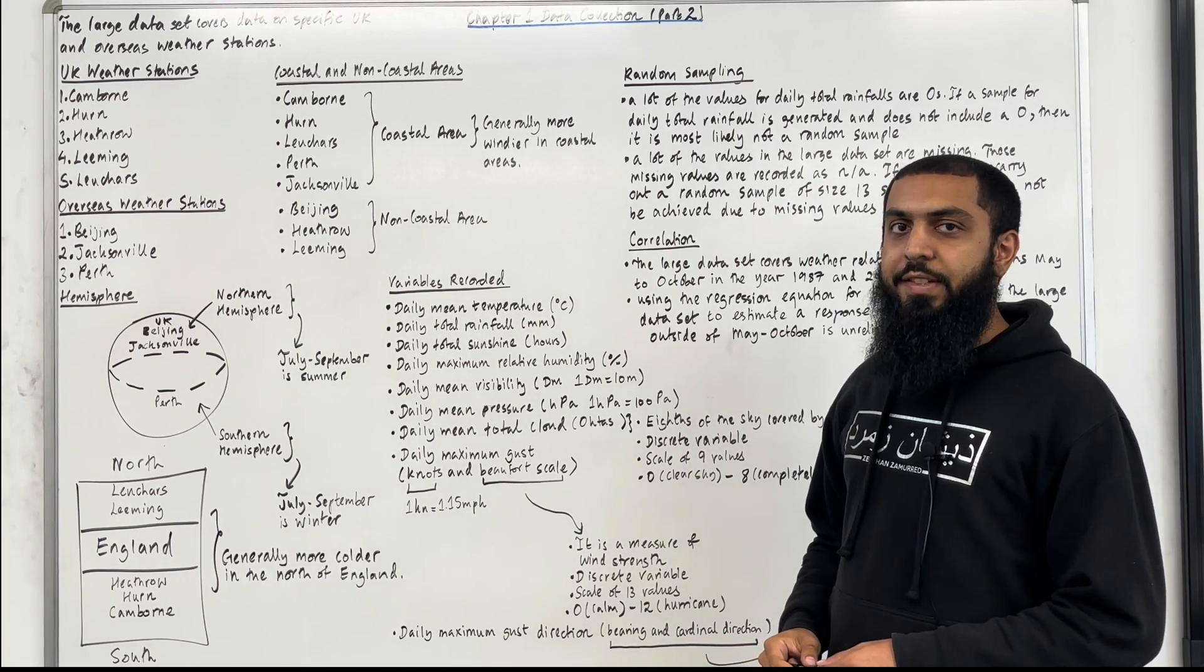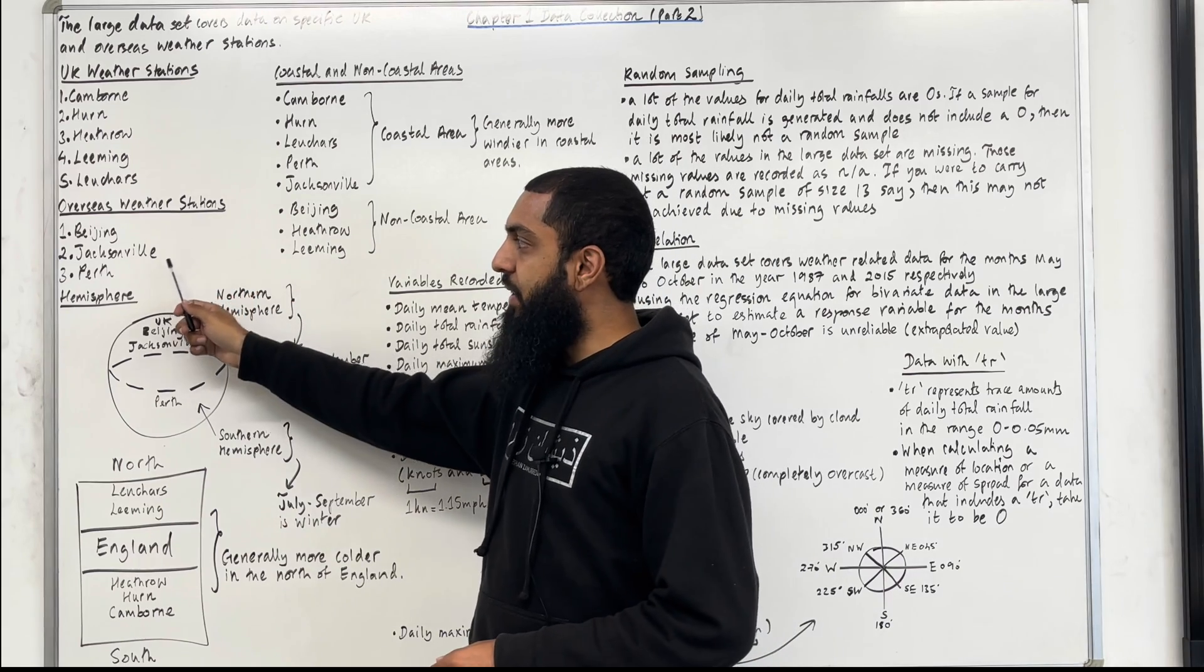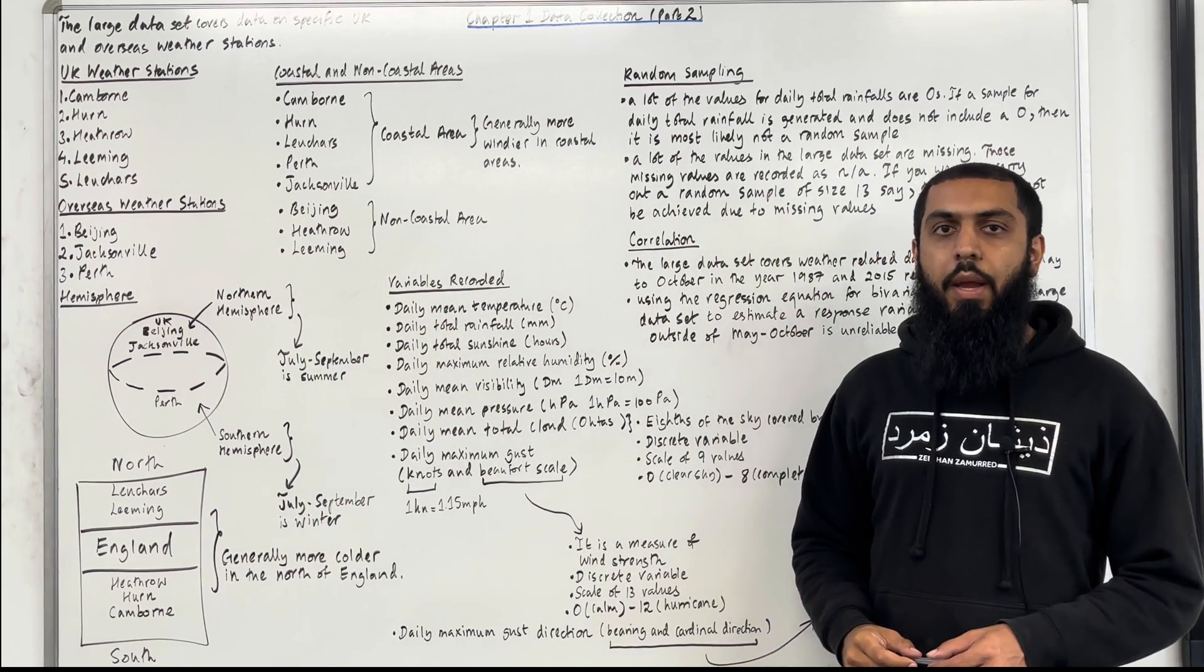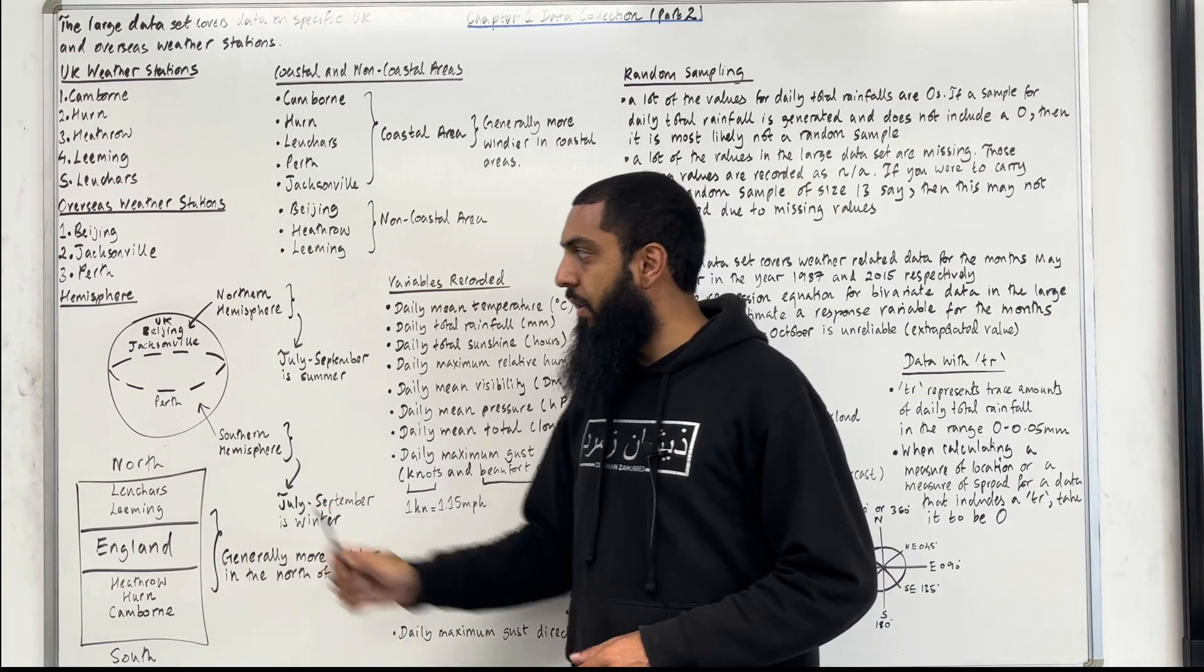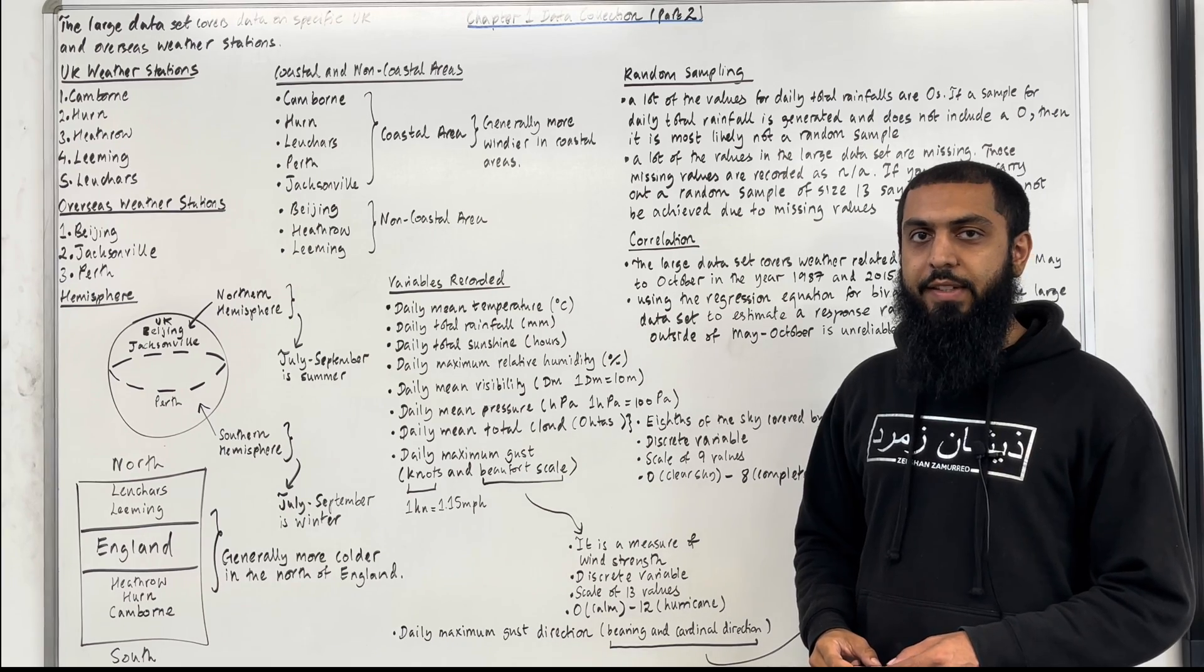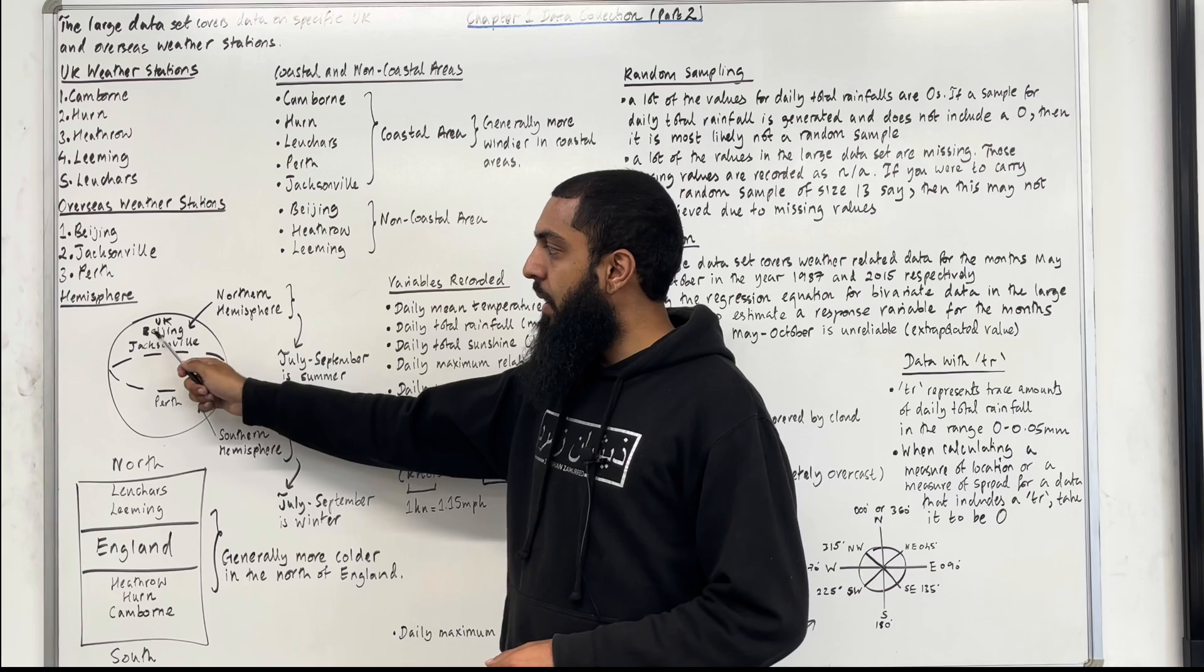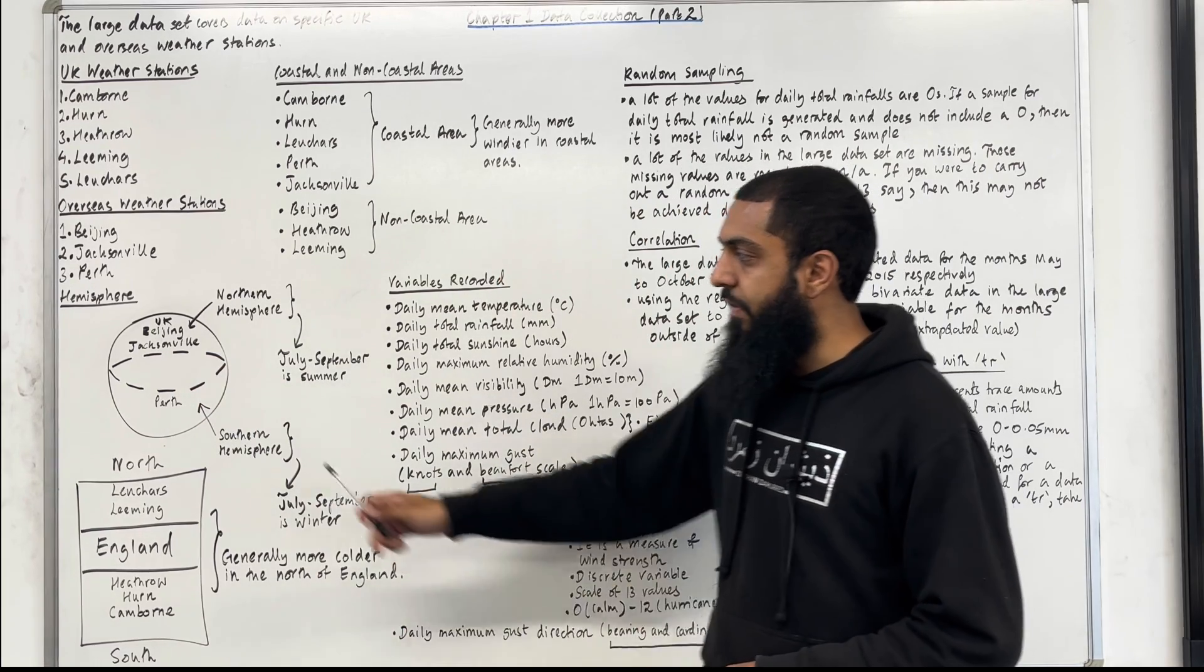Moving on to overseas weather stations. Overseas we have Beijing, Jacksonville and Perth. The earth is divided into two hemispheres: the Northern Hemisphere and the Southern Hemisphere. In the Northern Hemisphere we have UK weather stations, Beijing and Jacksonville. In the Southern Hemisphere we have Perth.